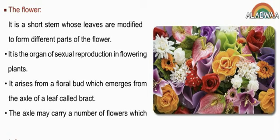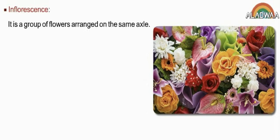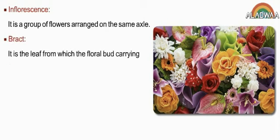The axil may carry a number of flowers which are known as inflorescence. Inflorescence is a group of flowers arranged on the same axil. Bract: it is the leaf from which the floral bud carrying the flower emerges.